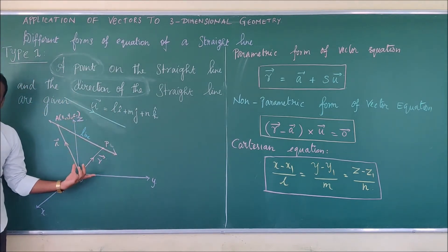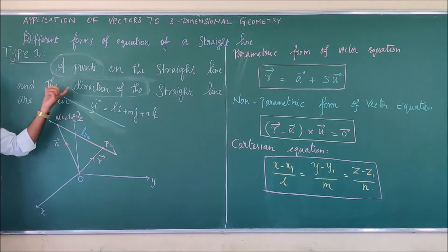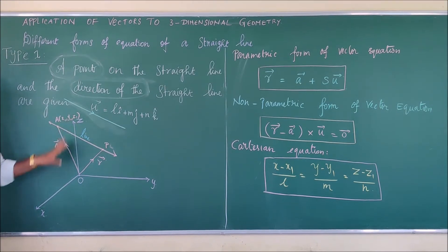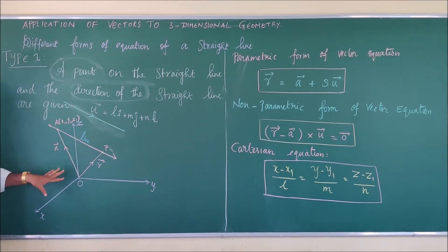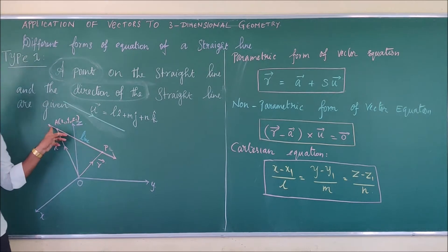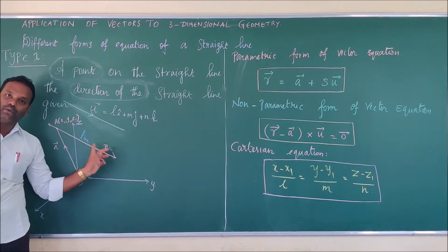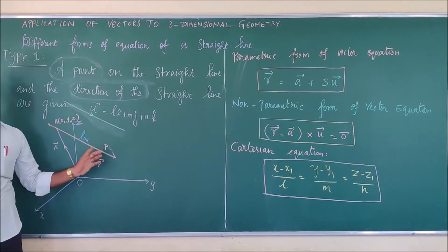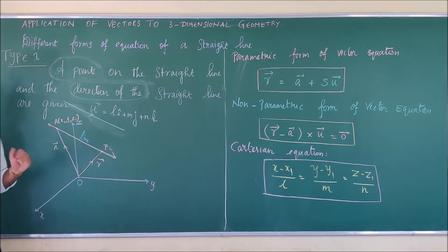Now I have drawn a diagram for which you have to look. This is the coordinate axis x, y and z axis. Already you are having this is the standard coordinate axis in three dimensional. This is the line what we are going to draw. For this line only, we are going to write the equation.